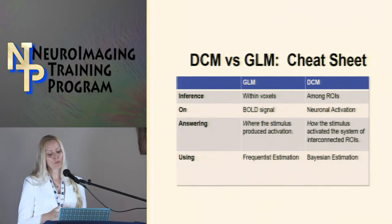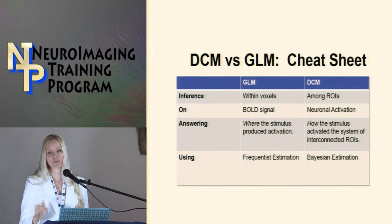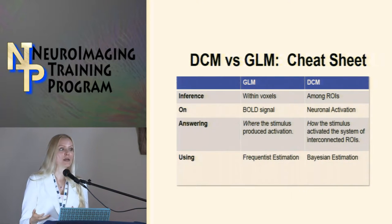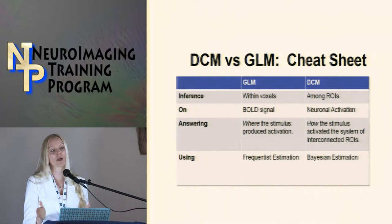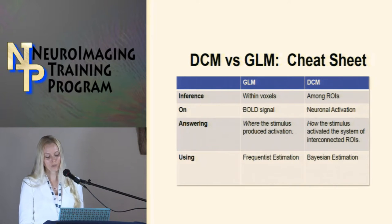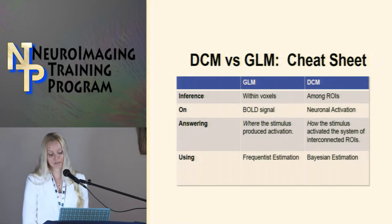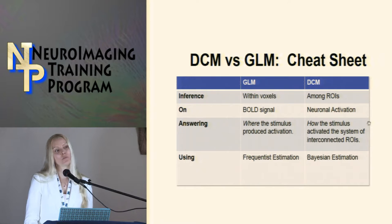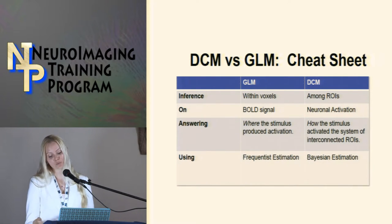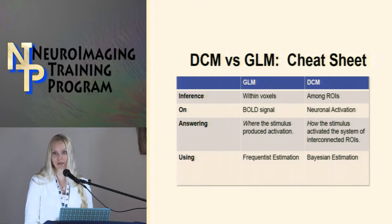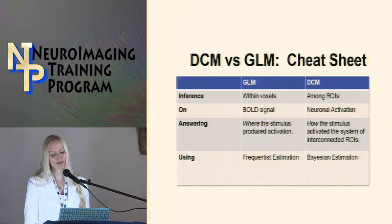DCM models how the stimulus activated the system of interconnected ROIs. You can specify that the signal hits one input point and then propagates throughout, rather than assuming as in a GLM that it hits all areas at the same time. The final difference is that Bayesian estimation is used to identify the most likely distribution of parameters in DCM, whereas in GLM you're using frequentist estimation — getting out your beta (X'X)⁻¹X'Y.